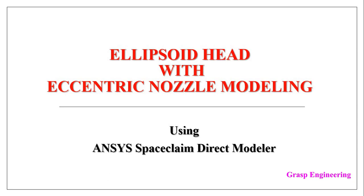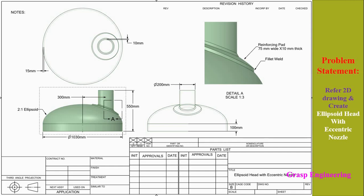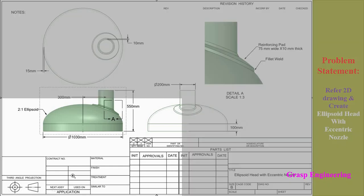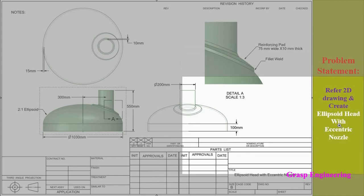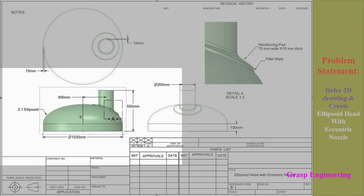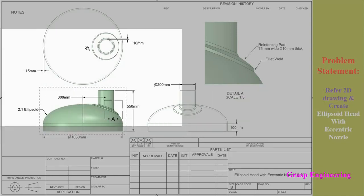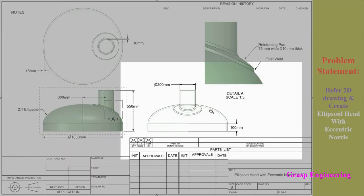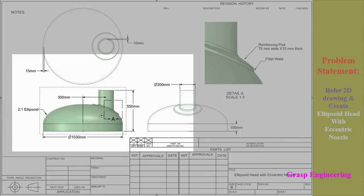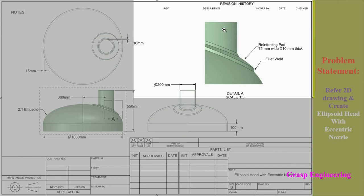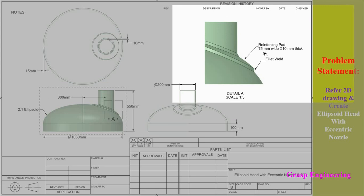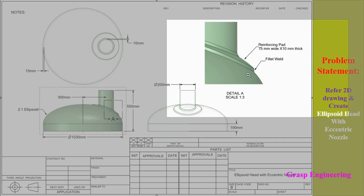Now we will go to our problem statement and then move to ANSYS. This slide represents our actual problem statement. We need to refer a 2D drawing and create an ellipsoid head with eccentric nozzle. You can see the front view, top view, and side view, plus a small detail view which depicts this nozzle having a reinforcing pad of 75 mm wide and 10 mm thick.